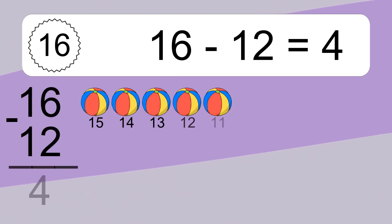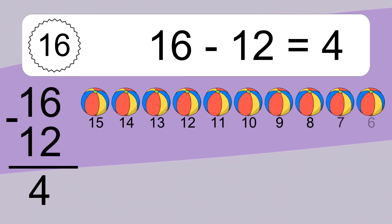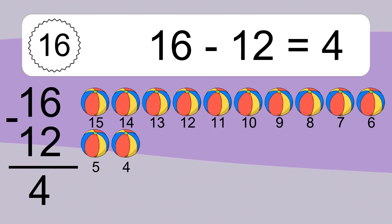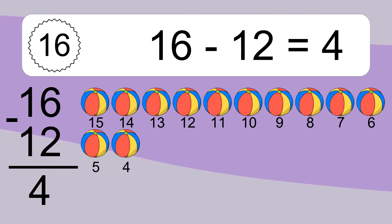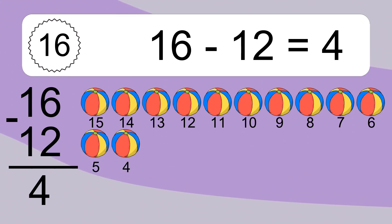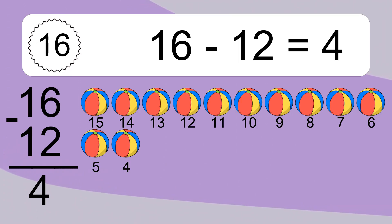16 minus 12 equals 4. Let's count it: 15, 14, 13, 12, 11, 10, 9, 8, 7, 6, 5, 4. 11 minus 9 equals what?